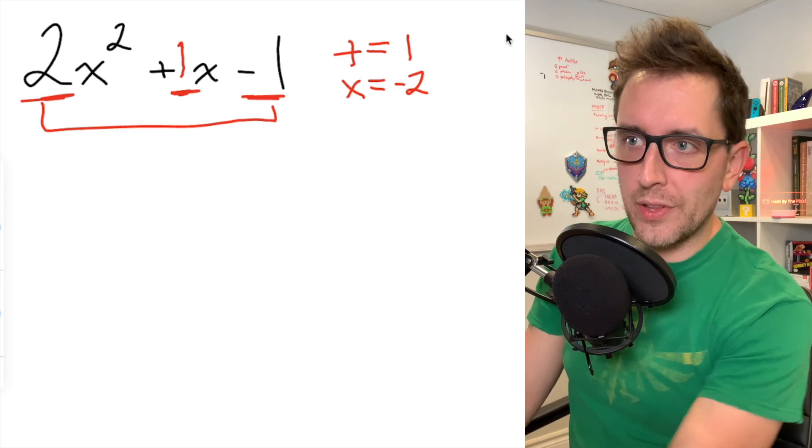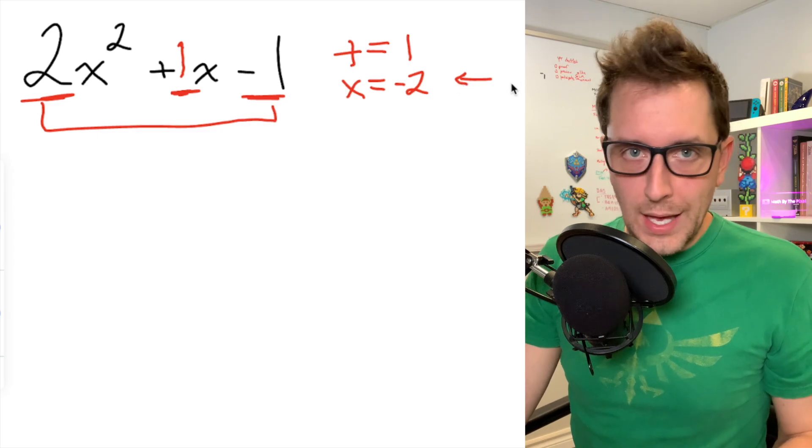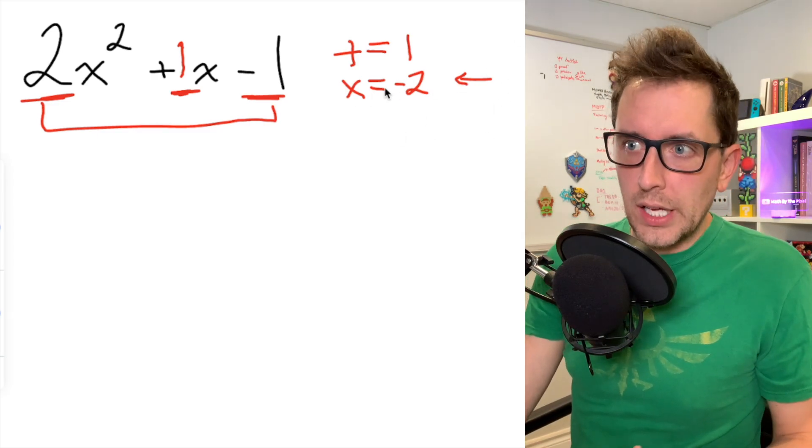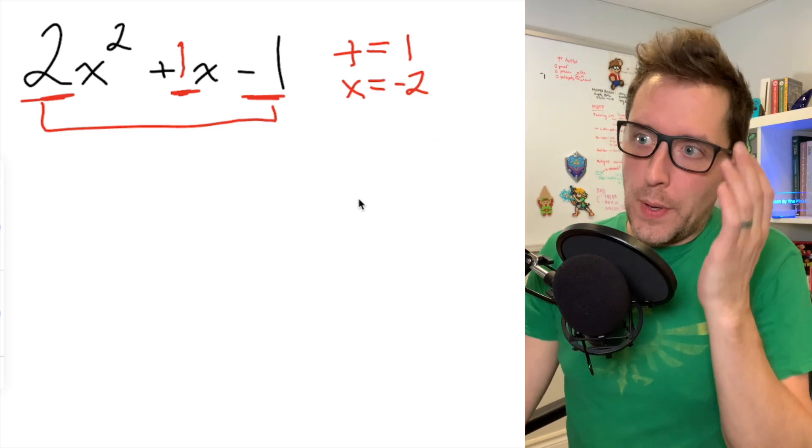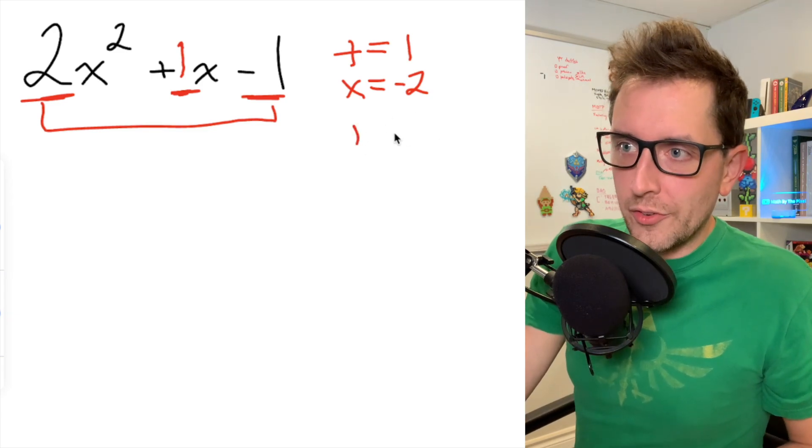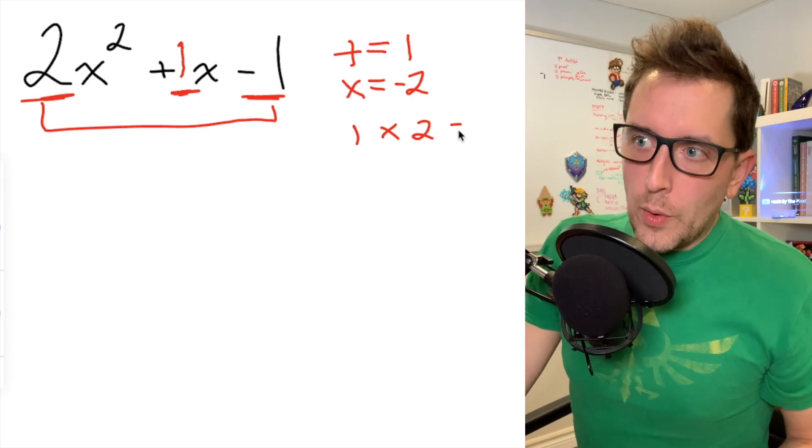Some people might tell you to start by looking at the addition condition, adding to get 1, probably because adding is generally simpler than multiplication. But I like to start by looking at the multiplication. I'm going to show you the thinking I use to come up with the two numbers. So I like to start just by writing out the factors of 2. In this case, it's pretty simple. There's only really 1 and 2. If I multiply 1 times 2, I'm going to get 2. So that's where I want to start.